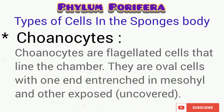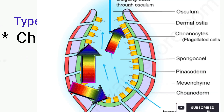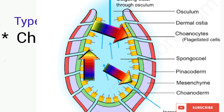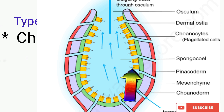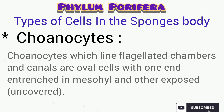Let's start with the choanocyte. Choanocytes are flagellated cells that line the chambers of the spongocoel. Take a look at the sponges being displayed on the screen. The choanocytes actually line the inner chamber, and one end of the choanocyte is exposed to the inside canal while the other is embedded in the mesohyl, as you can see from the diagram being displayed.